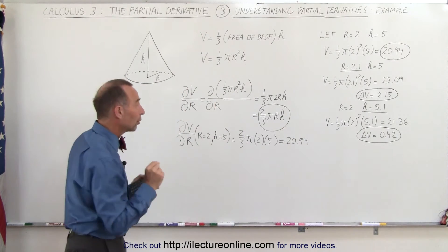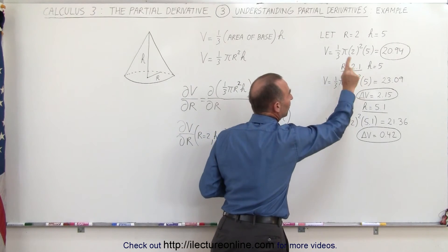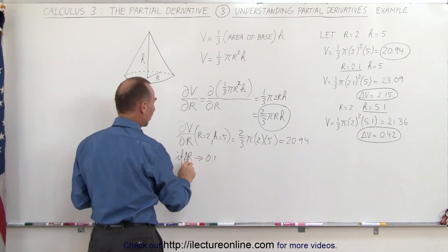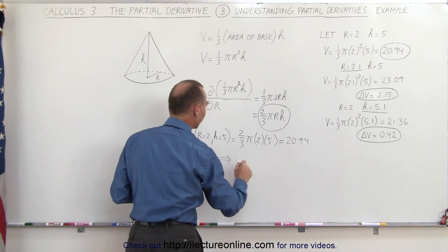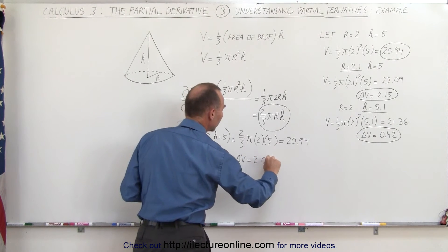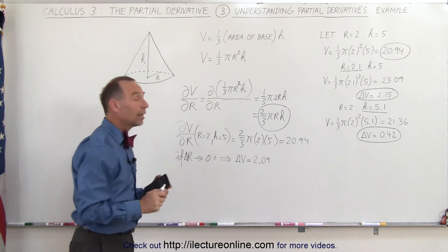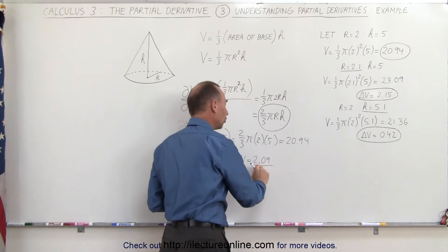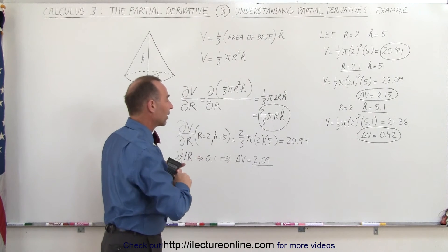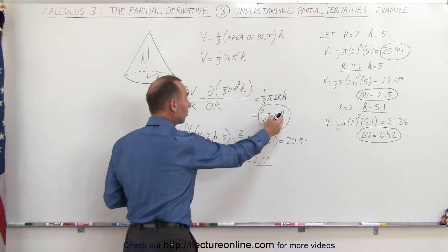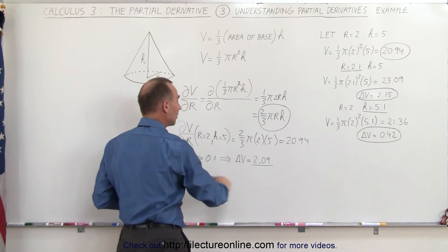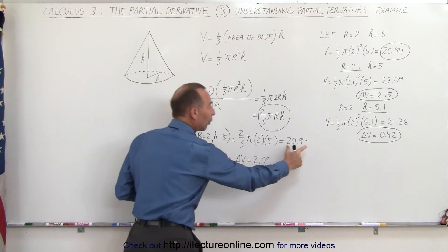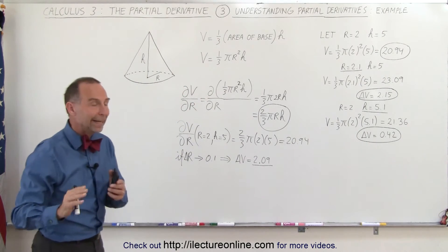Since the change isn't linear, we plug in the same change as before: we let r change by 0.1 units. So if Δr = 0.1, we take a tenth of 20.94, giving a change in volume of 2.09 units. Comparing that to the direct calculation of 2.15, you can see they're very close. The partial derivative gives the more accurate value at the exact point, and we kept h constant while only letting r change.